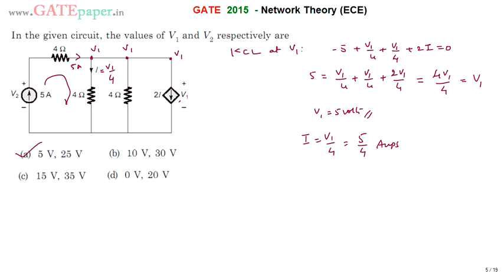Now V2, apply KVL for this loop. So that is V2 minus voltage across this one. Current flowing through it is 5 and resistance is 4 ohms. V2 minus 5 into 4.